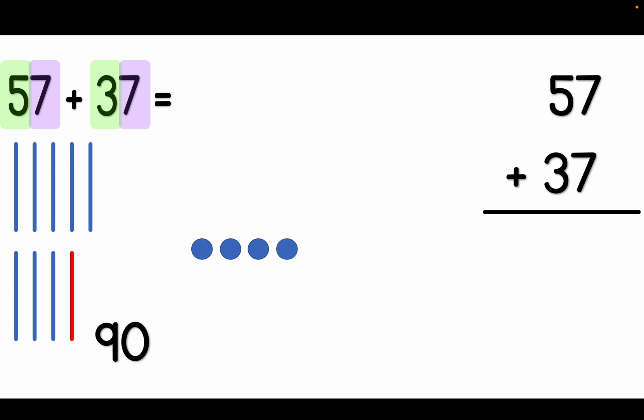Let's see how many ones we have: 1, 2, 3, 4. We have four ones. So let's put that together. 90 and 4 will give us 94.